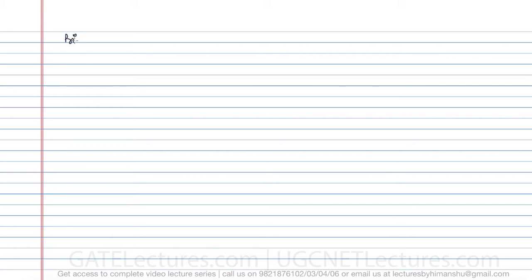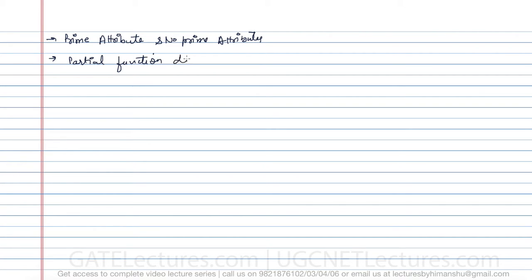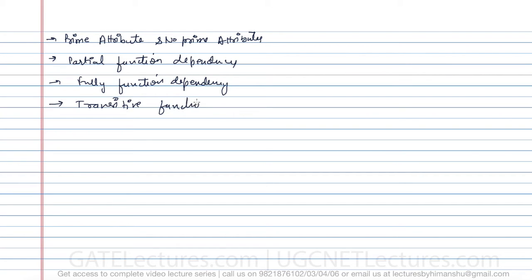This is the last topic before we start normalization. We need to study what are prime attributes and what are non-prime attributes. Then we will study what is a partial functional dependency, what is a fully functional dependency, and what is a transitive functional dependency.